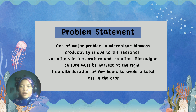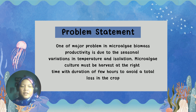Problem Statement: One of the major problems in microalgae biomass productivity is due to the seasonal variation in temperature and insolation. Microalgae cultures must be harvested at the right time within a duration of a few hours to avoid total loss of the crop. Therefore, this project is done to assess the right time to harvest microalgae biomass through biomass concentration measurement.